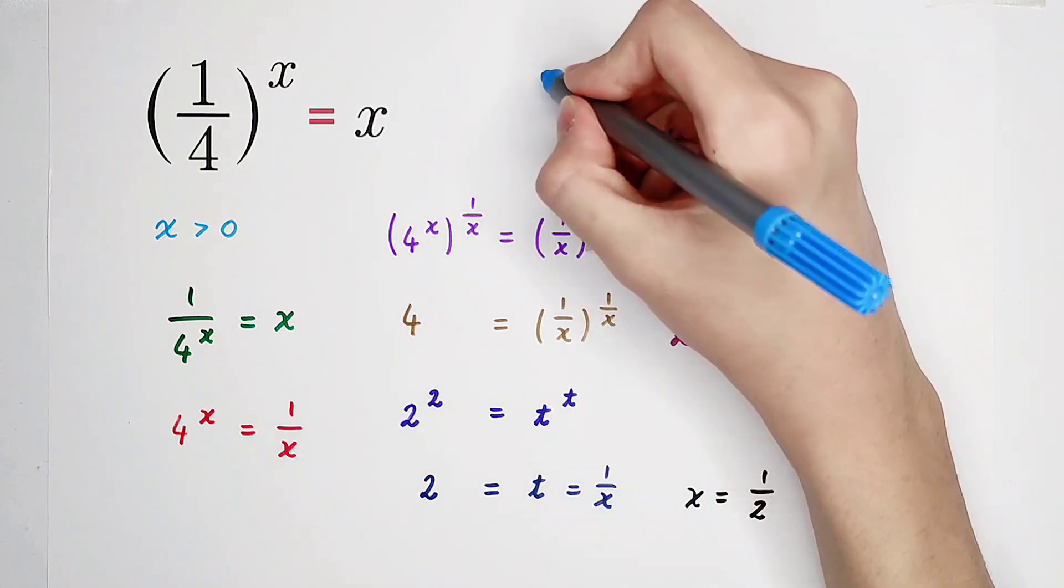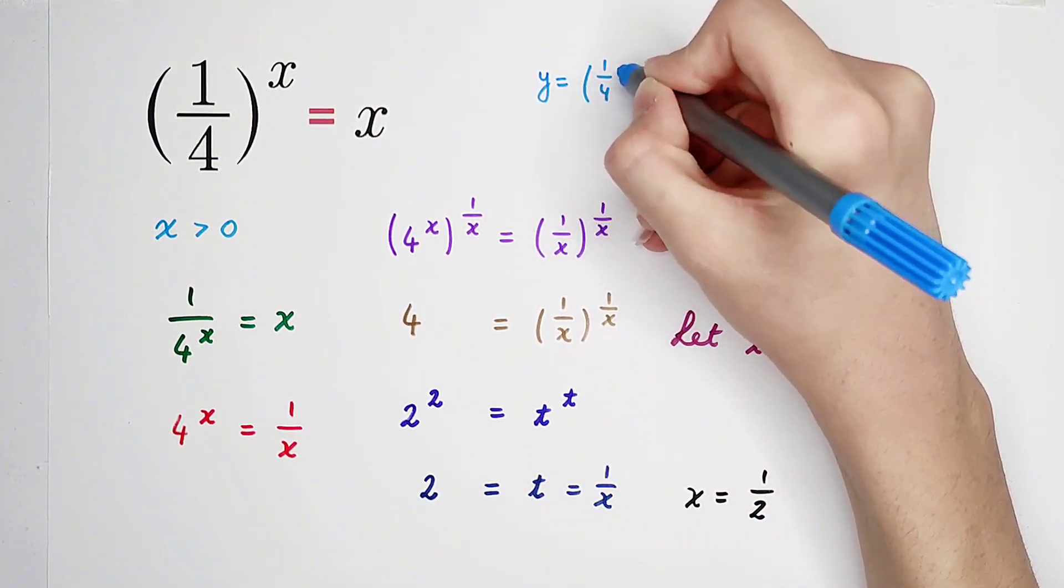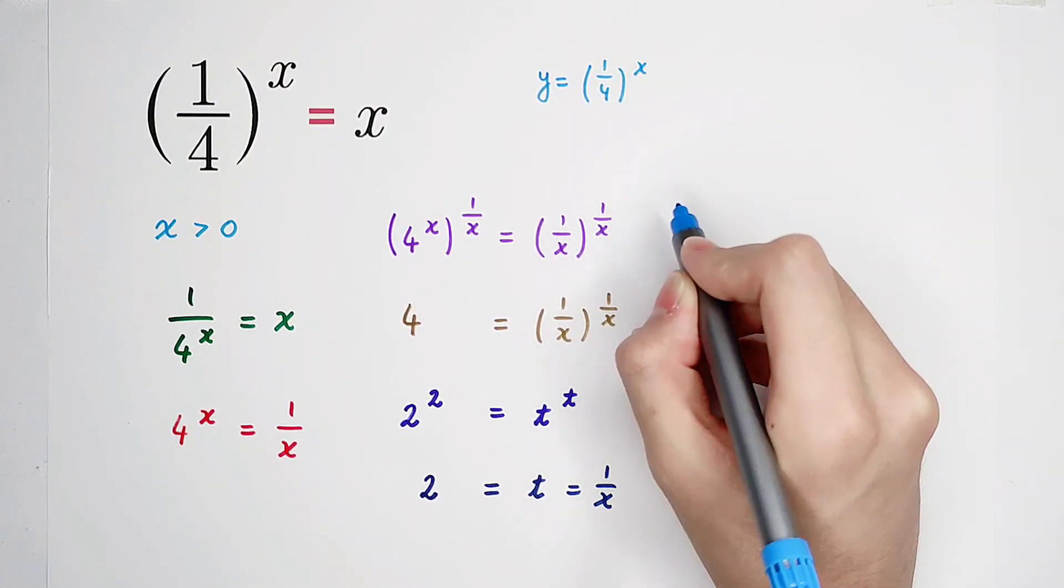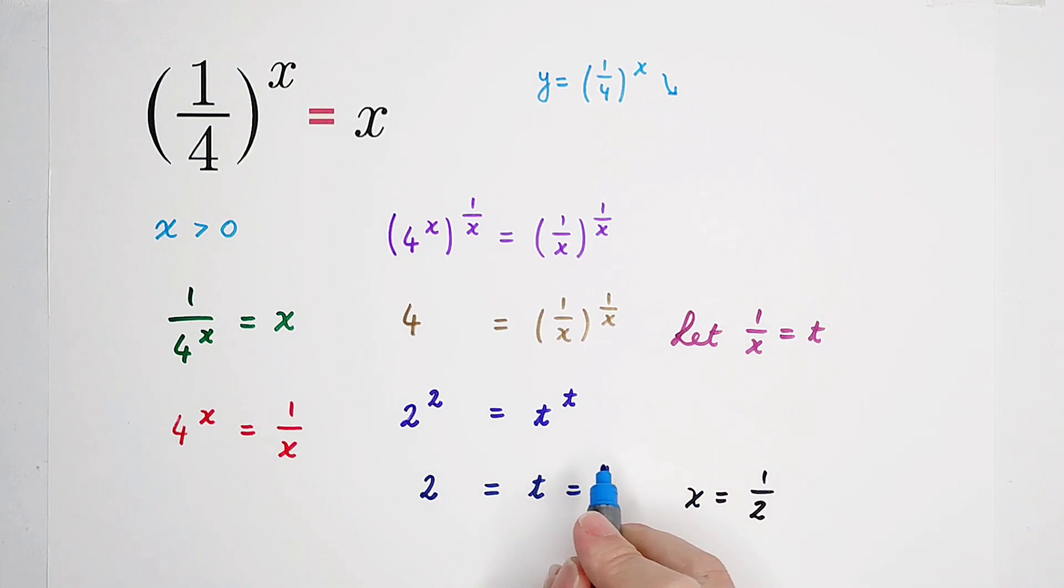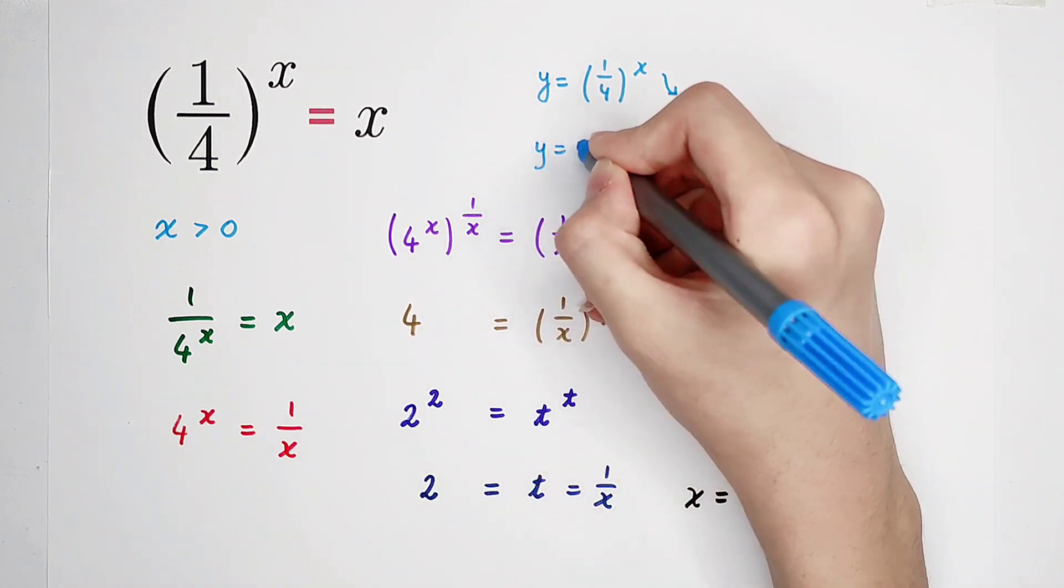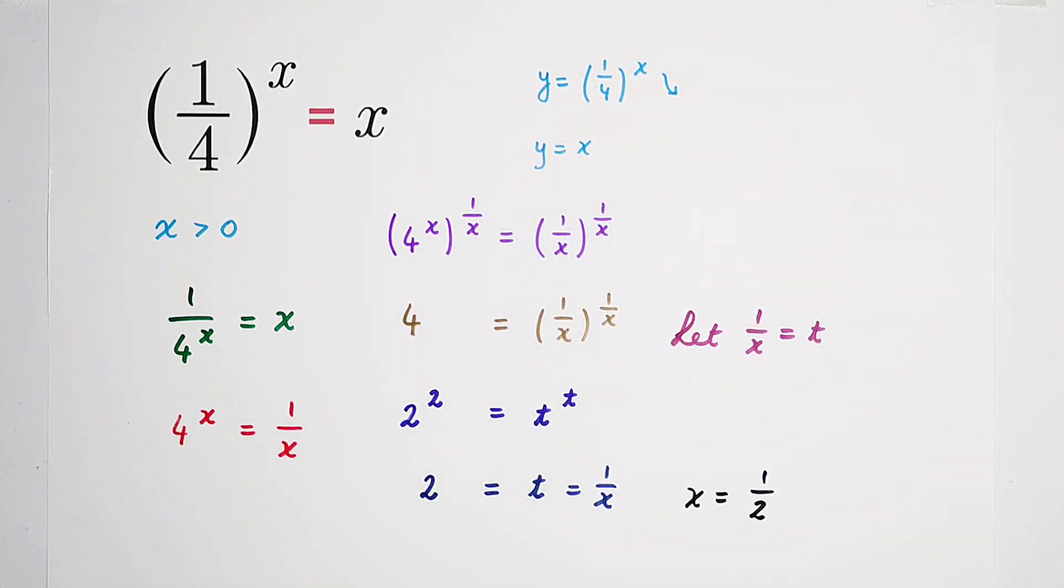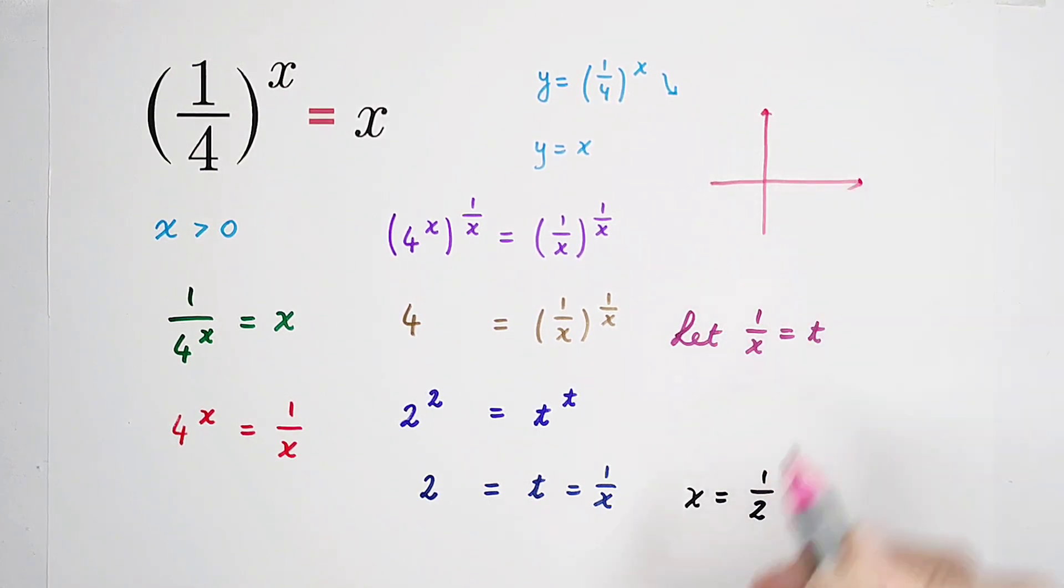The left-hand side can be regarded as the function y is equal to one over four to the power of x. Monotonically decreasing. And the right-hand side, y equals x. We can construct the plane.